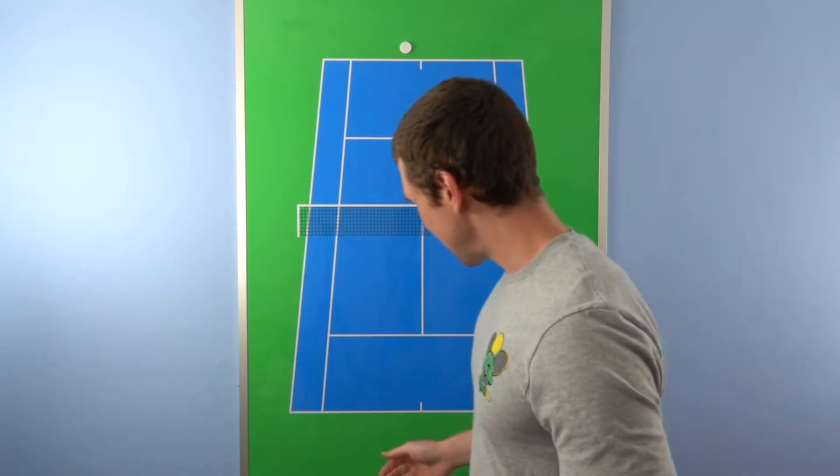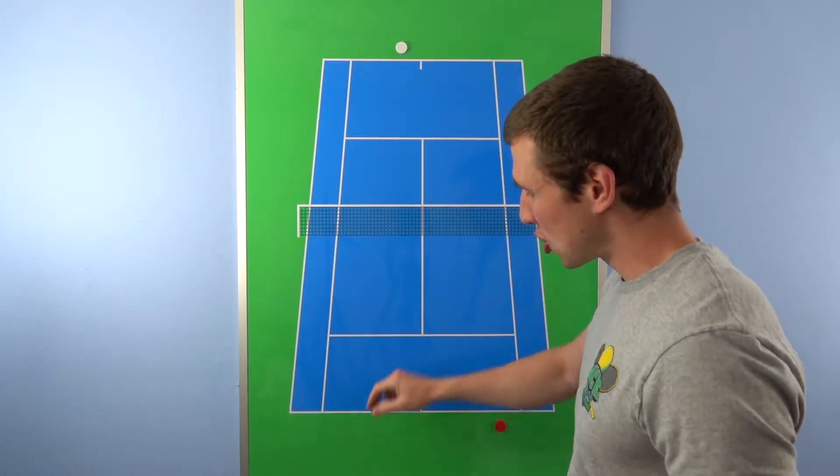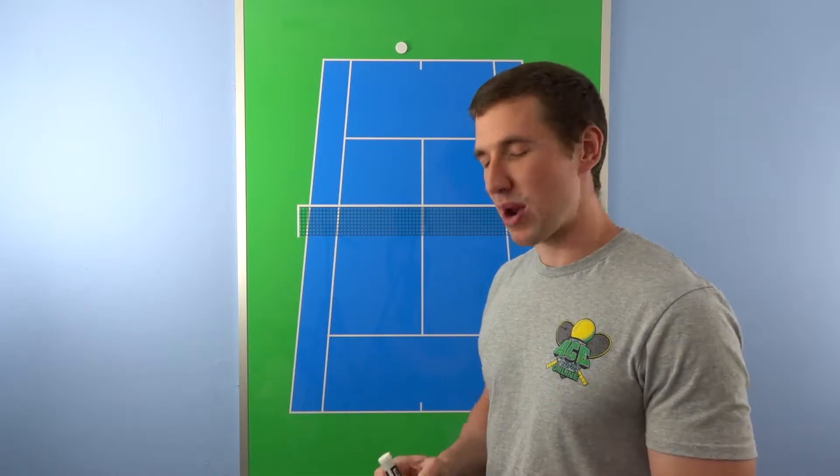Alright, now I told you I'm going to show you the number one mistake that I always see. So let's get right into it. One of the number one things that I see is trying to go down the line when out of position.